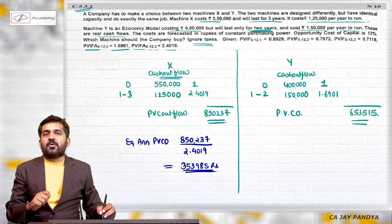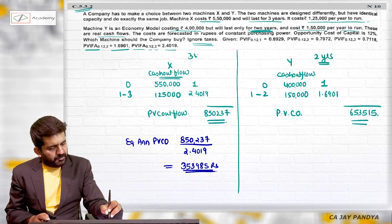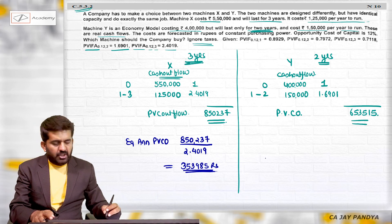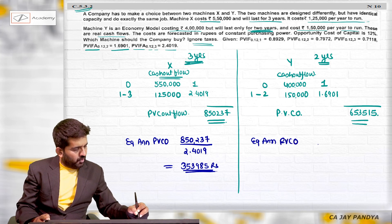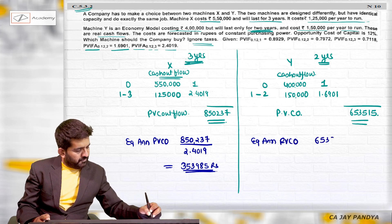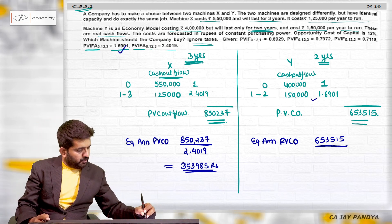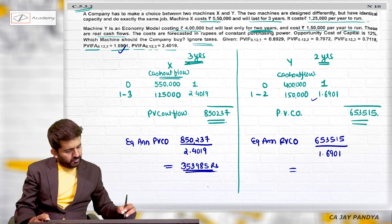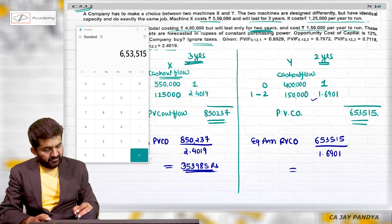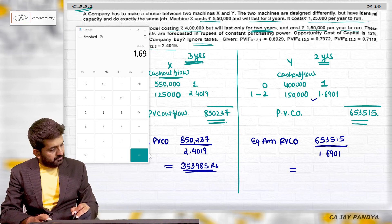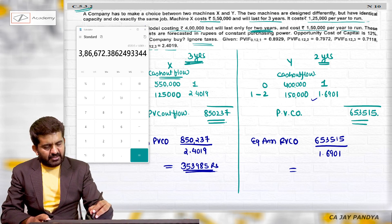But I cannot compare the NPV or present value of cash outflow because this project is for two years and this project is for three years. So I am finding out the equalized annual present value of cash outflow: 6,53,515. I need to take the present value annuity factor for two years, which I have taken over here - 1.6901, which gives 3 lakh 86,672.